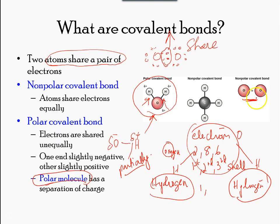Non-polar covalent bonds form between two atoms of the same element or between elements that share the electrons equally. For example, an oxygen atom can bond with another oxygen atom to fill their outer shells.